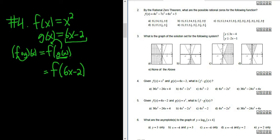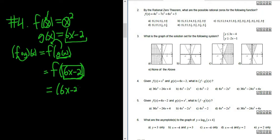All we've done is replace g with what it is, 6x minus 2. Now we have to look at f. So f of 6x minus 2 — that's what we have to evaluate. f of x is up here, so this is our x, and we replace all of the x's with 6x minus 2. So this becomes 6x minus 2, squared.